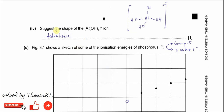Part B4: Suggest the shape of the Al(OH)4⁻ anion. This is aluminum with 4 hydroxide groups. Aluminum forms 4 dative bonds with the hydroxide ions, giving it tetrahedral geometry.